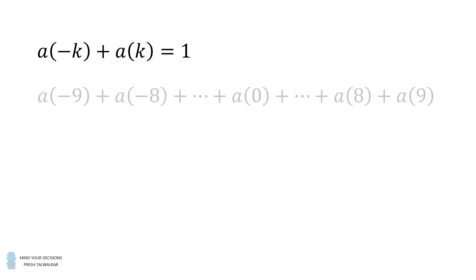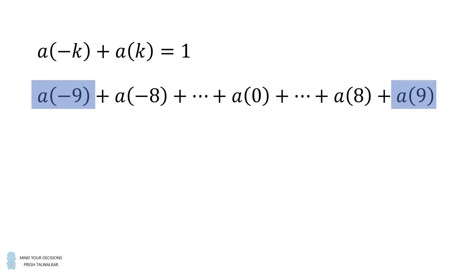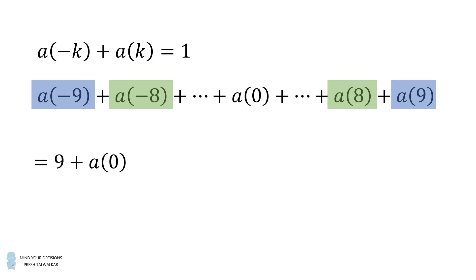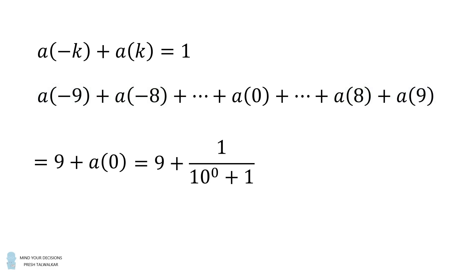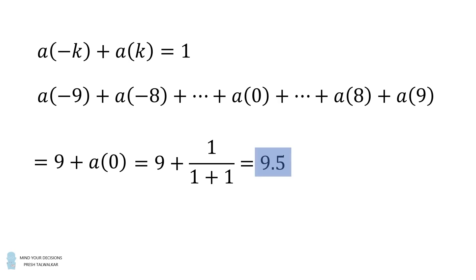Wow! So now let's solve the problem. We'll pair off the first and last terms — that equals 1. Then we pair off the second and second to last term — that equals 1. We have exactly 9 of these pairs. So this will be equal to 9 plus a_0. We substitute for a_0: 10 to the power of 0 equals 1, so 1 divided by 1 plus 1 equals 1 half. So this sum is equal to 9 plus 1 half, which equals 9.5. And that's the answer.